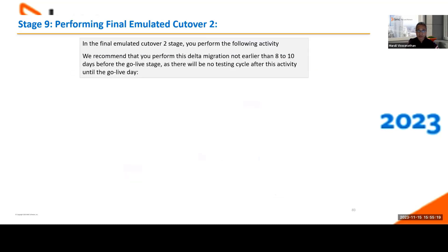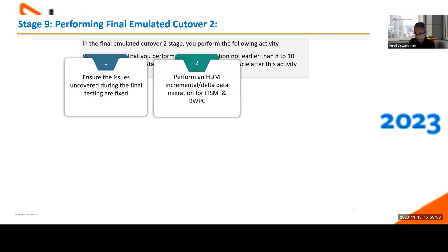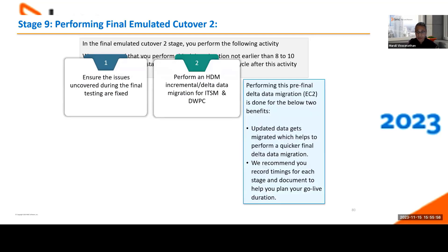The simulated cutover — stage nine — should be done eight to ten days before go-live to reduce the amount of data coming in at go-live, shortening the final data migration window. Ensure any issues uncovered during final testing are fixed. Perform a delta migration directly to your production from your staged database. This gives you a quicker final migration on go-live day. We strongly recommend these exact steps be timed, as they are the same steps you will practice on go-live. After completing, take golden backup three again (overriding it). Once this migration is complete, set your production to admin-only mode — you're nearly ready for go-live.